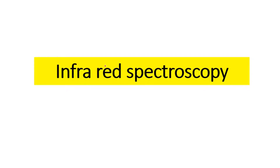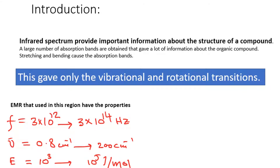Welcome to all of you, hope you are all well. Today we will discuss infrared spectroscopy, which is a type of spectroscopy in the IR region. We will analyze organic compounds using this technique. First of all, the infrared spectrum provides important information about the structure of an organic compound.